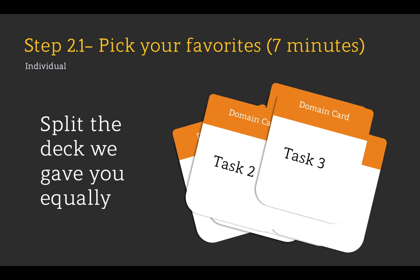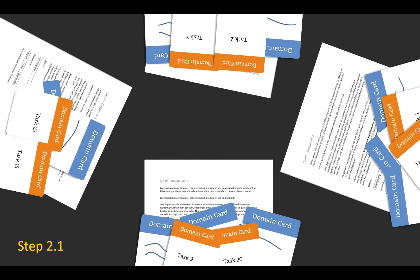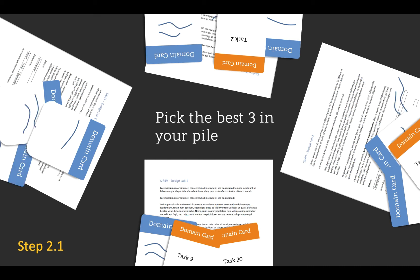Before sharing, you're going to take the domain cards we've created for this particular task — things we think might be interesting — and split those equally among everyone in your group. At this point, you'll have some cards that are yours and some that we've created. We're going to ask you individually to pick your favorites: from your domain cards and the ones we've created, pick the three best in your pile. At the end, each of you should have the three you like best. Don't share them yet — that comes next.